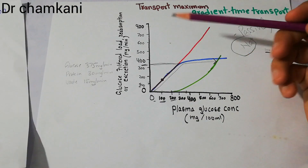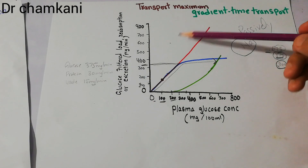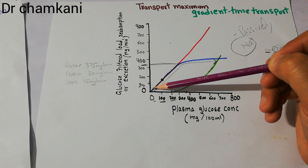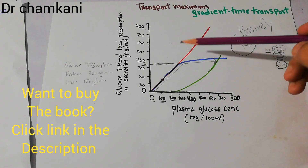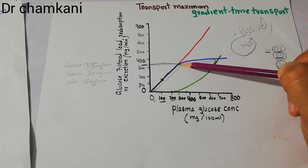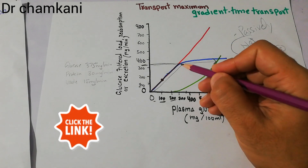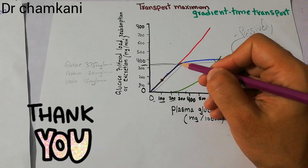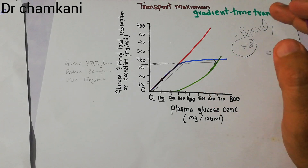We also discussed the graph of transport maximum: when a substance is filtered in the nephron, it is reabsorbed as well, but only within certain limits. If those limits are crossed, the filtered substance will not be reabsorbed; instead it will start getting excreted in urine — that level is the transport maximum, as was discussed in the case of glucose.